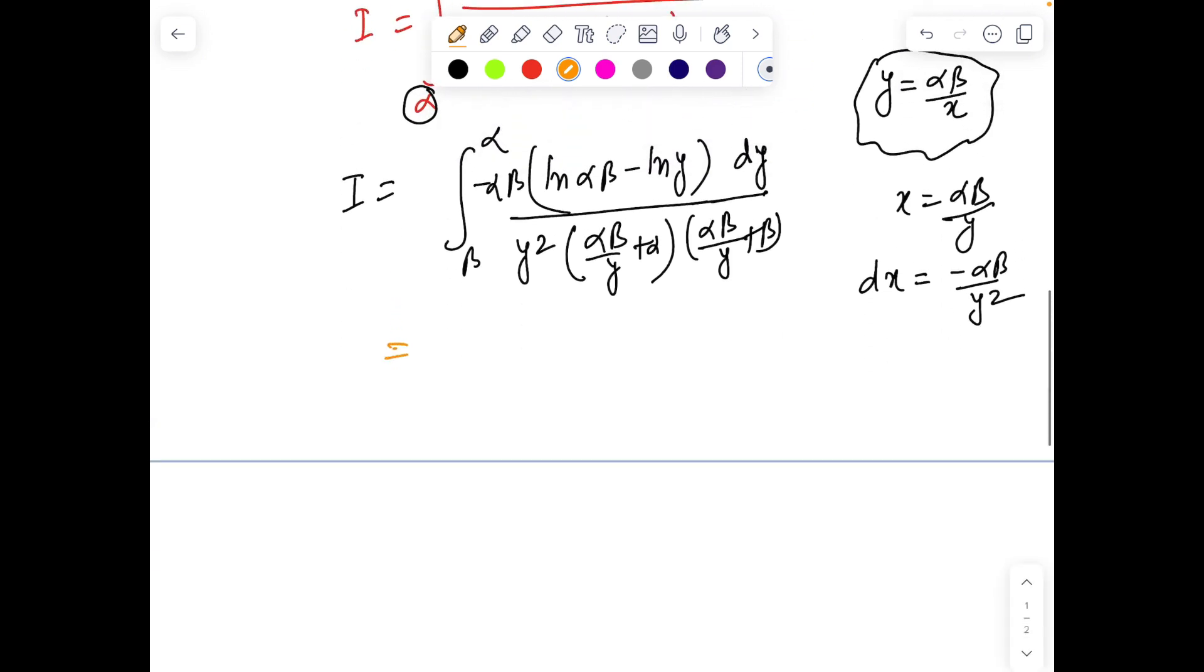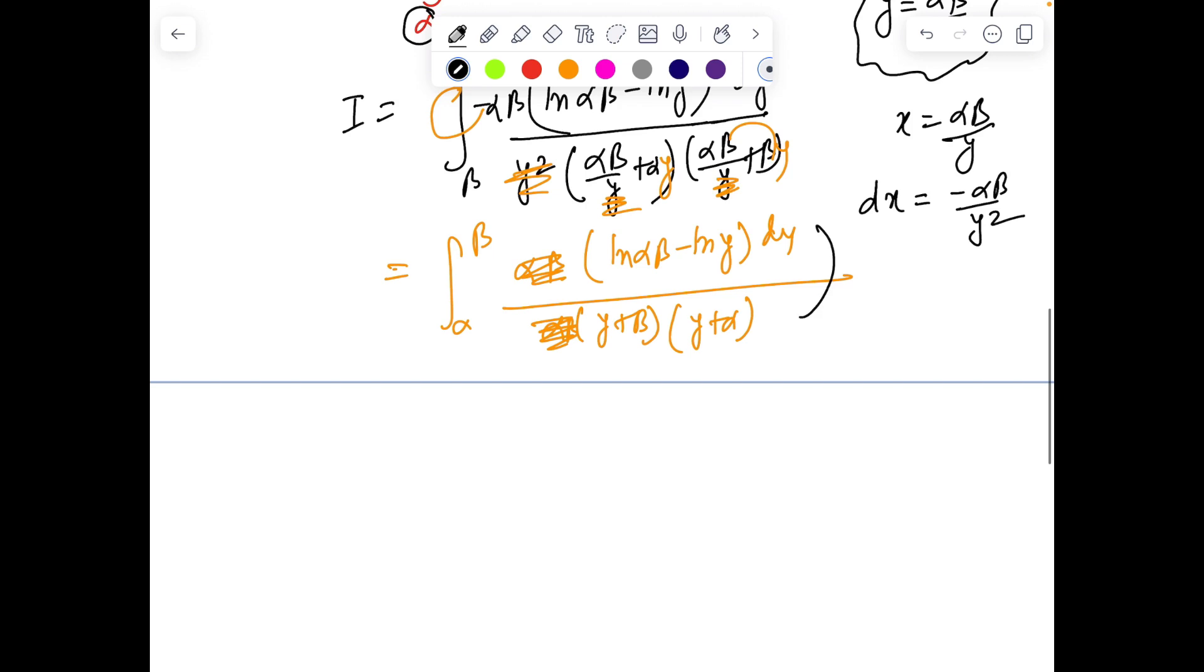Putting all this expression, we can see some common cancellation. This can be written as, because of the minus sign, αβ times ln(αβ) - ln y dy divided by... y² gets kicked from here. We have α times (y + β) and β times (y + α). That's great news because αβ gets kicked off from the system.